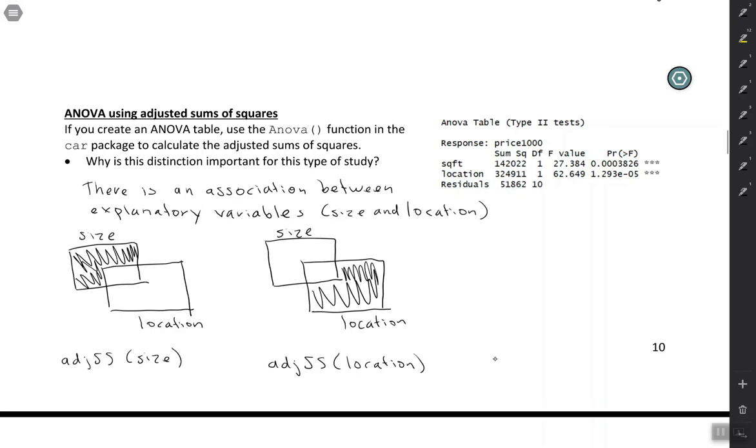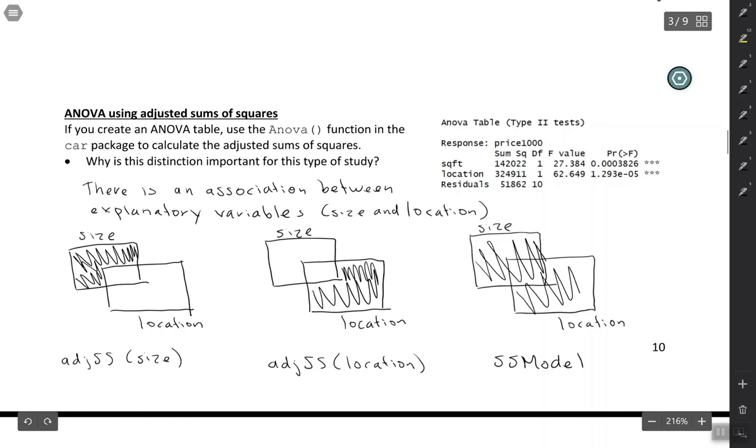Whereas if you were to calculate SS model, we've talked about SS model when we were doing simple regression, SS model, also called SS regression, that would include all of this. So it would include size and location and the part that could be explained by either of them. So SS model would include all of this. Specifically, it includes this little overlap square that we might call co-variation. So if you were to add these up, they wouldn't sum up to the SS model because SS model also includes the co-variation there in the middle.